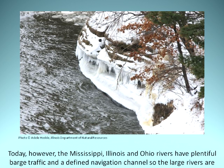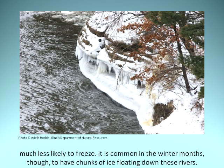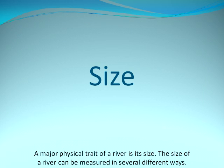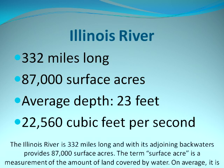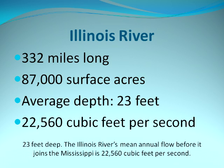Today, however, the Mississippi, Illinois, and Ohio rivers have plentiful barge traffic and a defined navigation channel so that large rivers are much less likely to freeze. It is common in the winter months, though, to have chunks of ice floating down these rivers. Size: A major physical trait of a river is its size, which can be measured in several different ways. The Illinois River is 332 miles long and with its adjoining backwaters provides 87,000 surface acres. On average, it is 23 feet deep, and its mean annual flow before joining the Mississippi is 22,560 cubic feet per second.